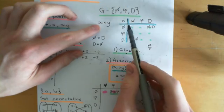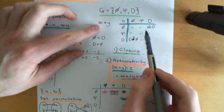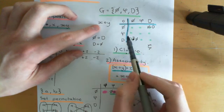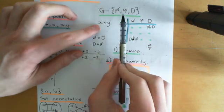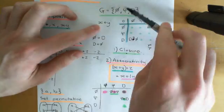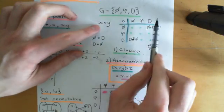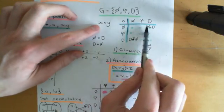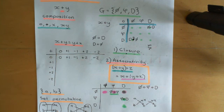That means defining all of the entries in this composition table. We've got all of the elements of the group here and here, and you need to go through and put answers in to these nine sockets.